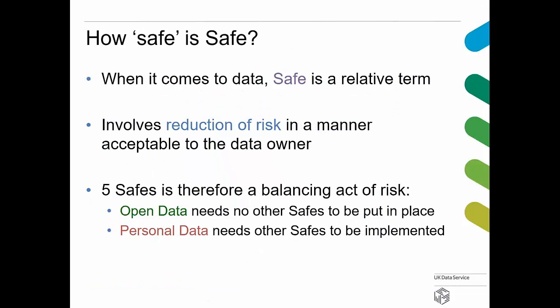There's a three-minute video setting out how this works. Safety is a relative term — there's no such thing as absolute safety, and the more you begin to link sources together, the more tenuous safety becomes. It does involve reduction of risk in a manner acceptable to the data owner — they are the ones who sign off the level of risk. The five safes work as a balancing act: open data is safe data and needs none of the other four safes, but personal data needs all of them.